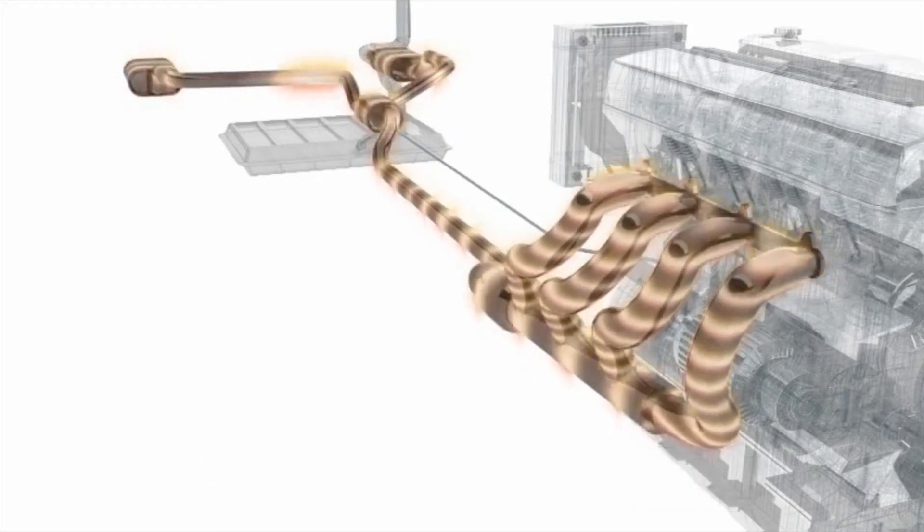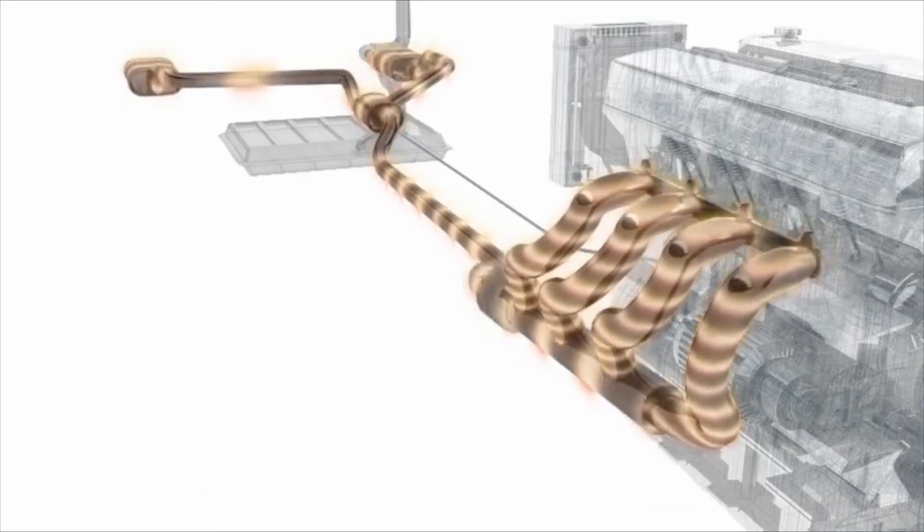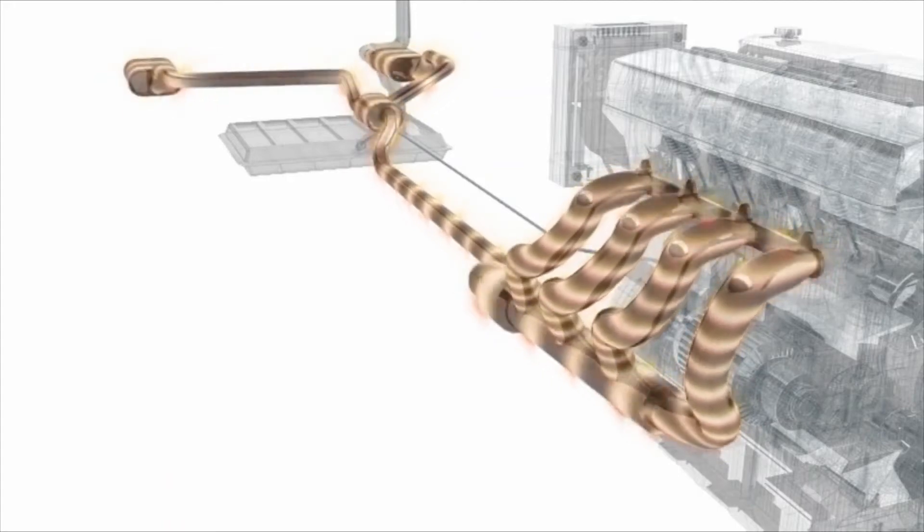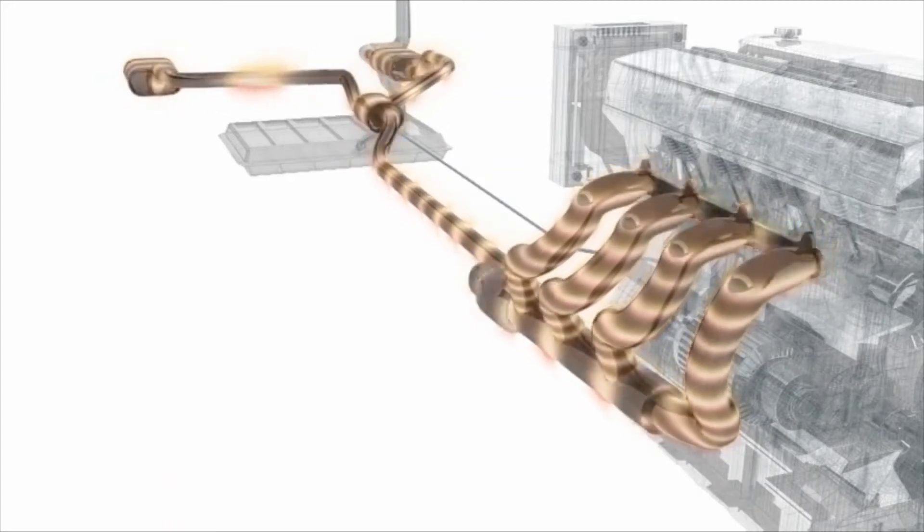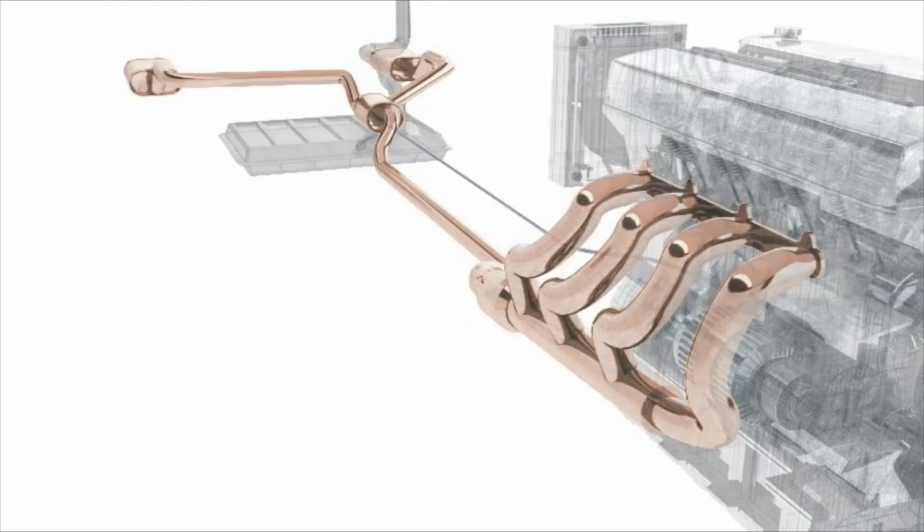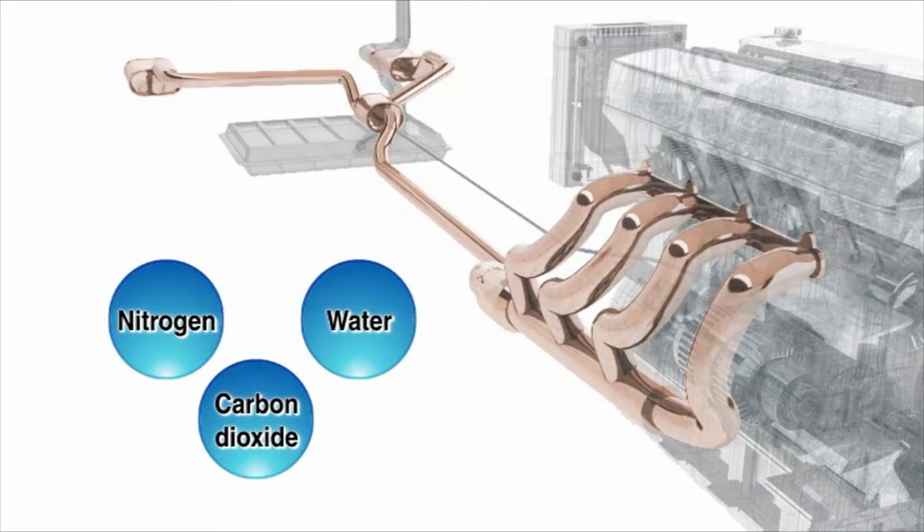The exhaust is collected into a single tube before being sent for conversion into less harmful gases. The exhaust gas is composed of nitrogen, carbon dioxide, water, along with toxic substances such as nitric oxides,